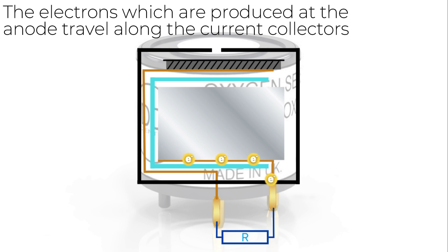The electrons which are produced at the anode travel along one current collector through the external load and across the other current collector, making them available for the reduction reaction happening at the sensing electrode.